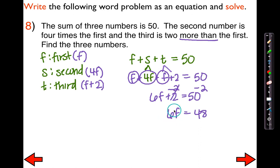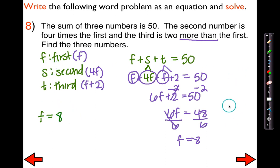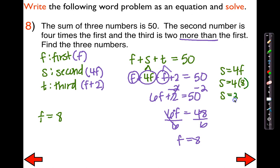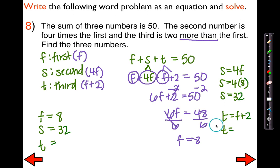Now I'm going to get rid of the coefficient — this means 6 times F. The inverse of multiplying is dividing, so dividing by 6 leaves me with F equals 8. My first number, which was F, is 8. The second number was 4F, so 4 times 8 equals 32. The third number was F plus 2, so 8 plus 2 equals 10.